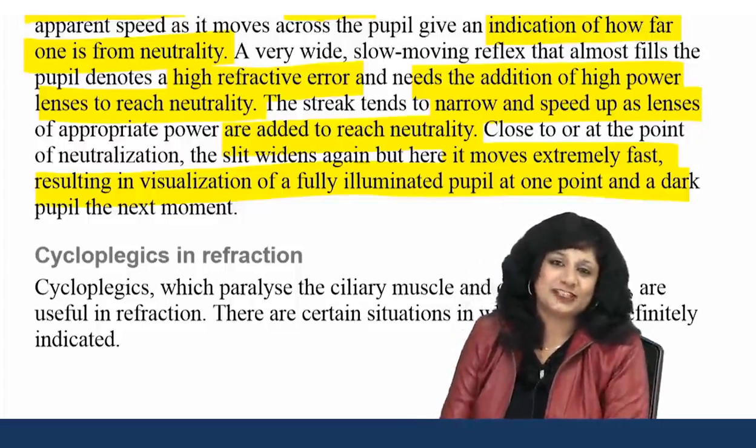Now the streak retinoscope: instead of a circular source of light as with the plane mirror, we use a streak of light produced by a plano-cylindrical lens. The appearances are more dramatic — a band of light in the pupillary aperture moves with or against. The axis of astigmatism is more easily determined with the streak retinoscope. On neutralization, the streak disappears and the pupil appears either completely dark or completely illuminated — no movement. The pictures clearly show with movement, against movement, and no movement for comparison.